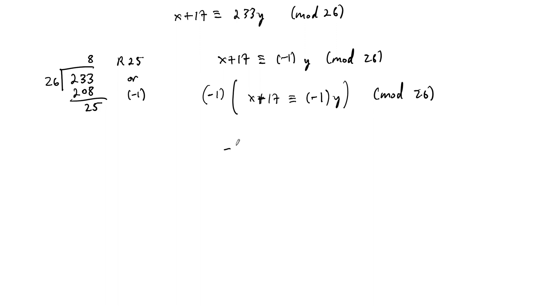Well, now we end up with negative x, or negative 1x, minus 17. So congruent to, we multiply by negative 1, so we've got our y, and this is all mod 26. So if we reduce mod 26, this is perfect.